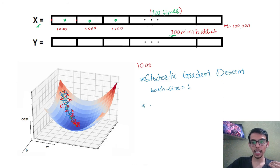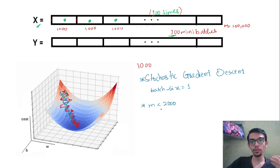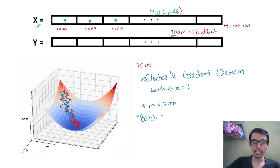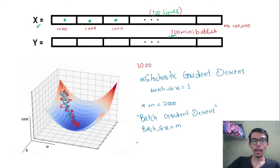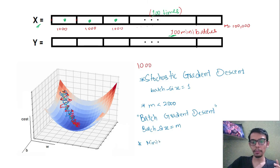So in practice, for a small dataset size — for example where m is less than 2,000 or 5,000 — we use normal gradient descent, which is actually called batch gradient descent. In batch gradient descent the batch size is simply the entire m. When the dataset size is huge, that is when we use mini batch gradient descent.